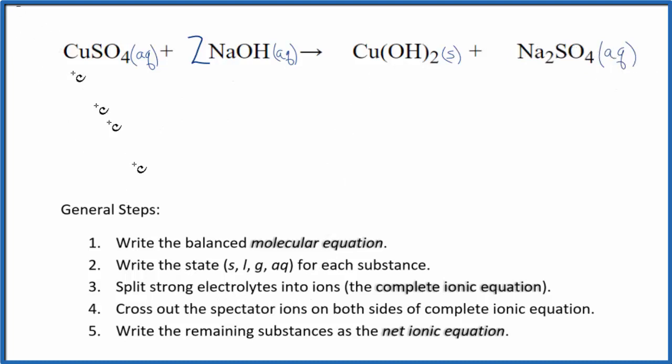Now we can split the strong electrolytes into their ions. And this is going to give us the complete ionic equation. Sometimes it's called the total ionic equation. We know that sulfate ion here is always going to be 2 minus. Copper, therefore, has to be 2 plus. That's why we're calling it copper 2 sulfate. So we have Cu2+ and I won't write aqueous until the end. Plus the sulfate ion, SO4 2 minus. That's a good one to memorize.